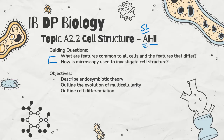Guiding questions are the same as our first lecture on topic A2.2: what are the features common to all cells, what are the features that are different, and how is microscopy used to investigate cell structure? We're not going to answer these questions fully — we're just going to layer on some extra super cool details. Our objectives for today: we're going to describe endosymbiotic theory, outline the evolution of multicellularity, and talk very briefly about cell differentiation.